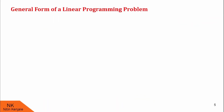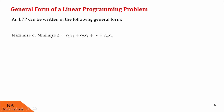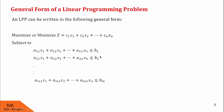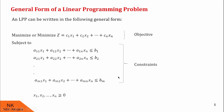Now, let us see the general form of LPP. An LPP can be written as: maximize or minimize z equal to c1x1 plus c2x2 up to cnxn, subject to a11x1 plus a12x2 up to a1nxn less than or equal to b1, and there are m such inequalities, whereas x1, x2, ..., xn are all greater than or equal to 0. The first part is called the objective function, the second part is called constraints, and the third part is called non-negativity restrictions.